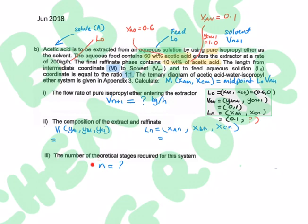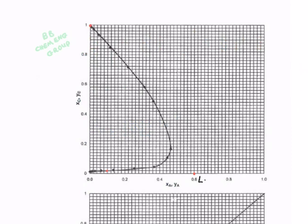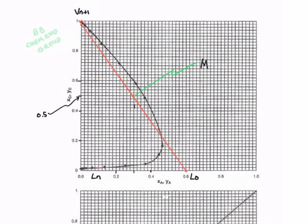Plot L0, Ln, and Vn+1. Then draw a line from L0 to Vn+1 to get your point M, because it is given in the questions the ratio of Vn+1 and M is one to one. So we can plot M - the coordinate can be found as 0.3 and 0.5.